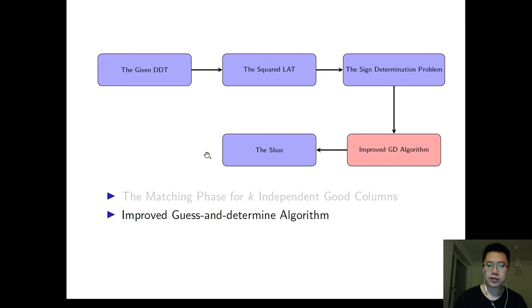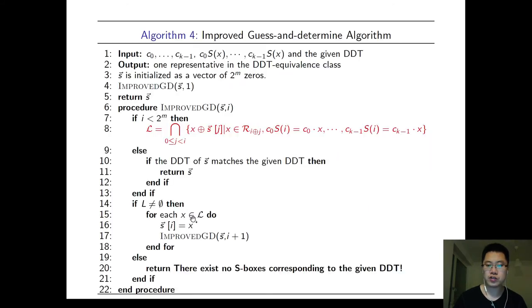Next, we will show the improved GD algorithm. For here, we have already known some components of S-Box. For example, C0 S(X) to CK-1 S(X). With this knowledge, we check the consistency every time we get new assignments.